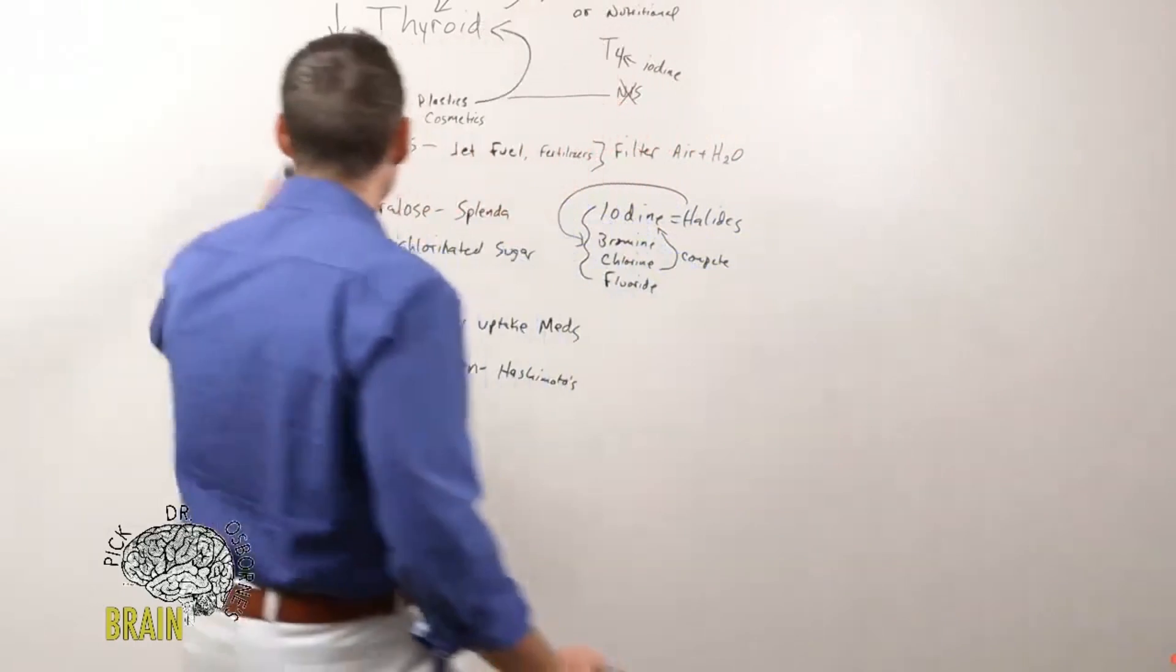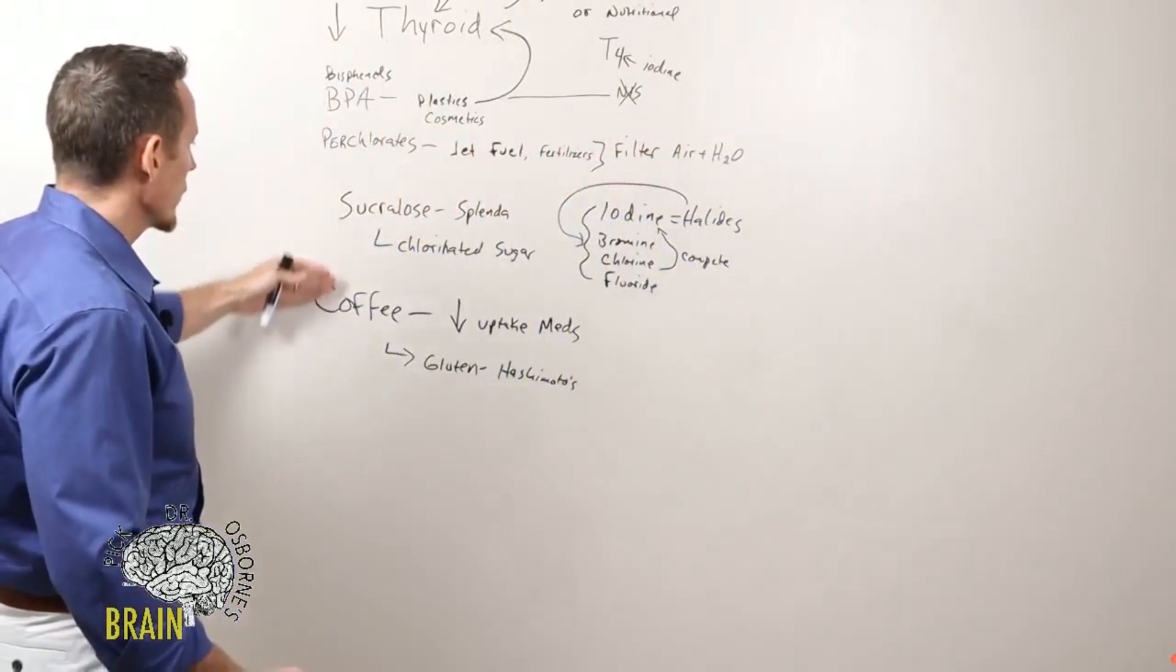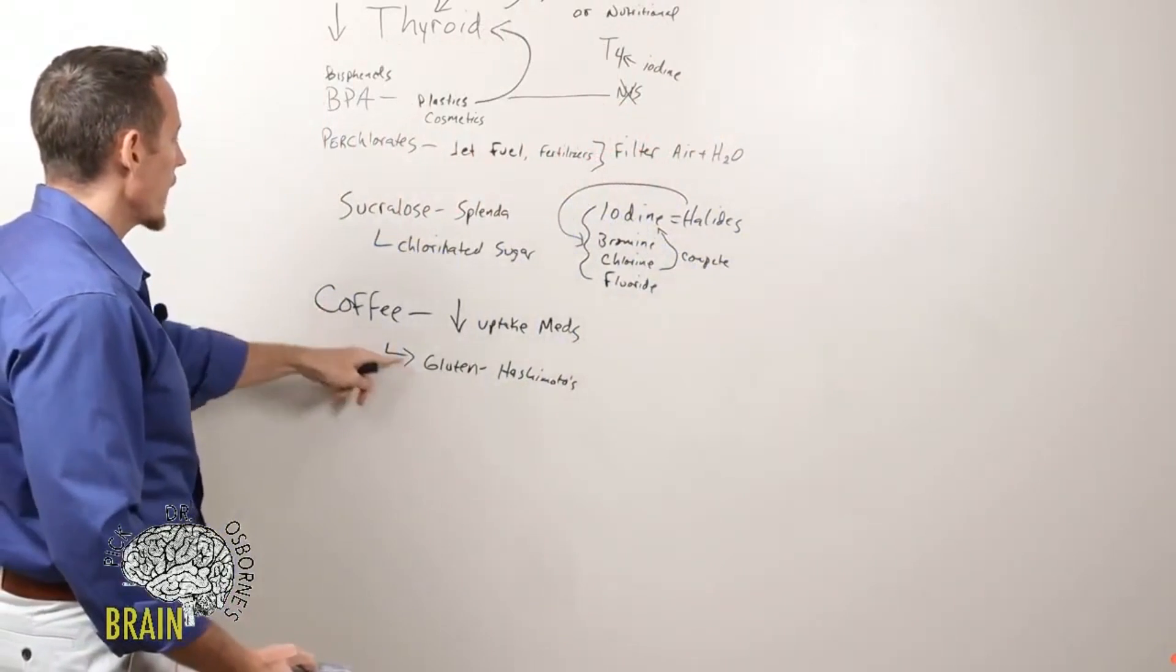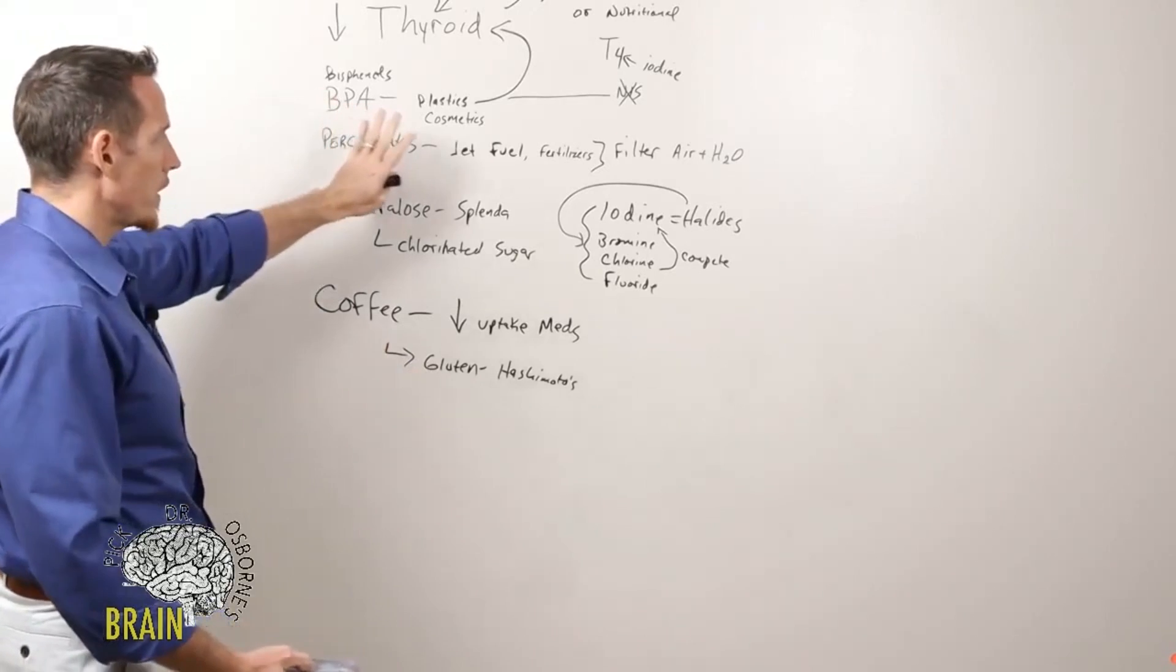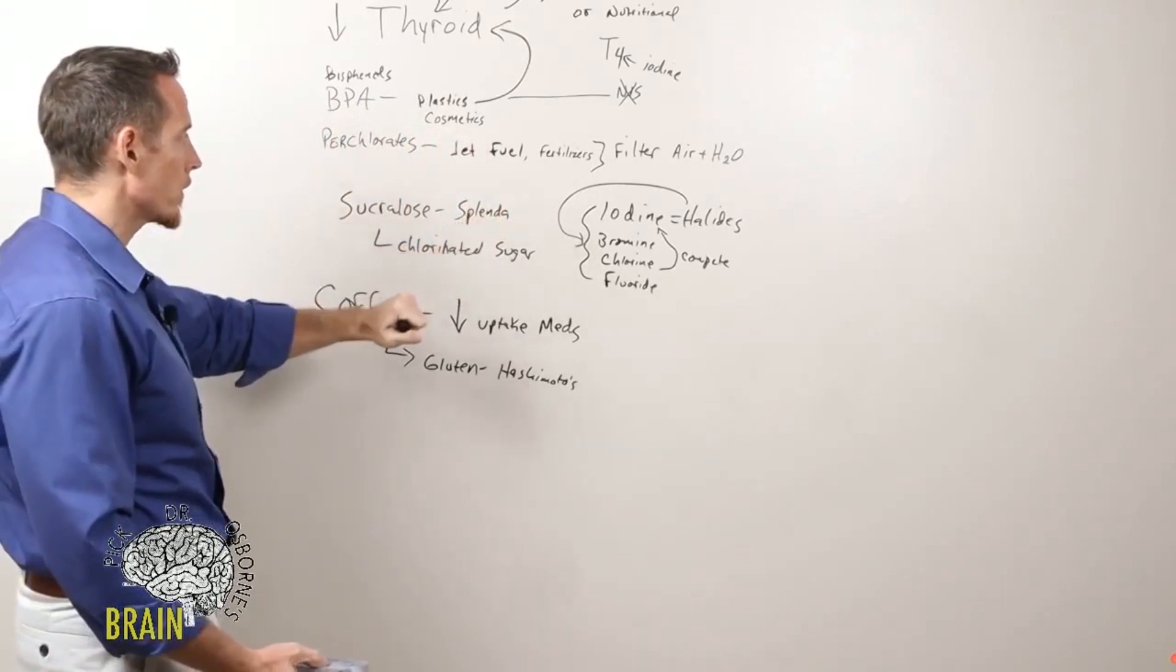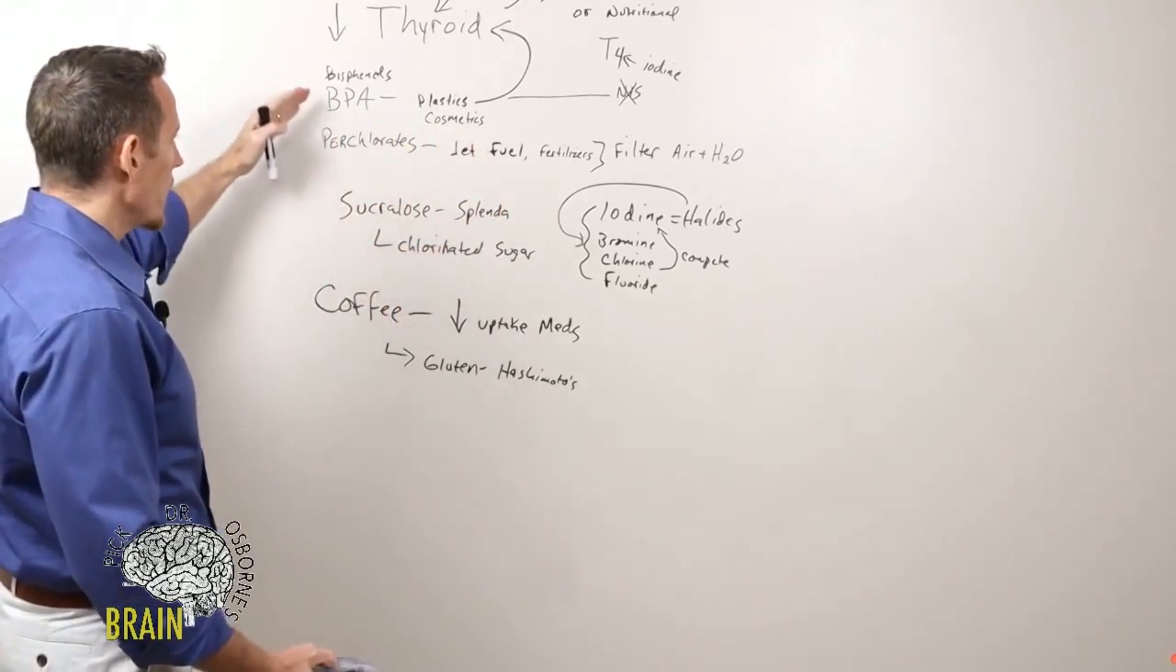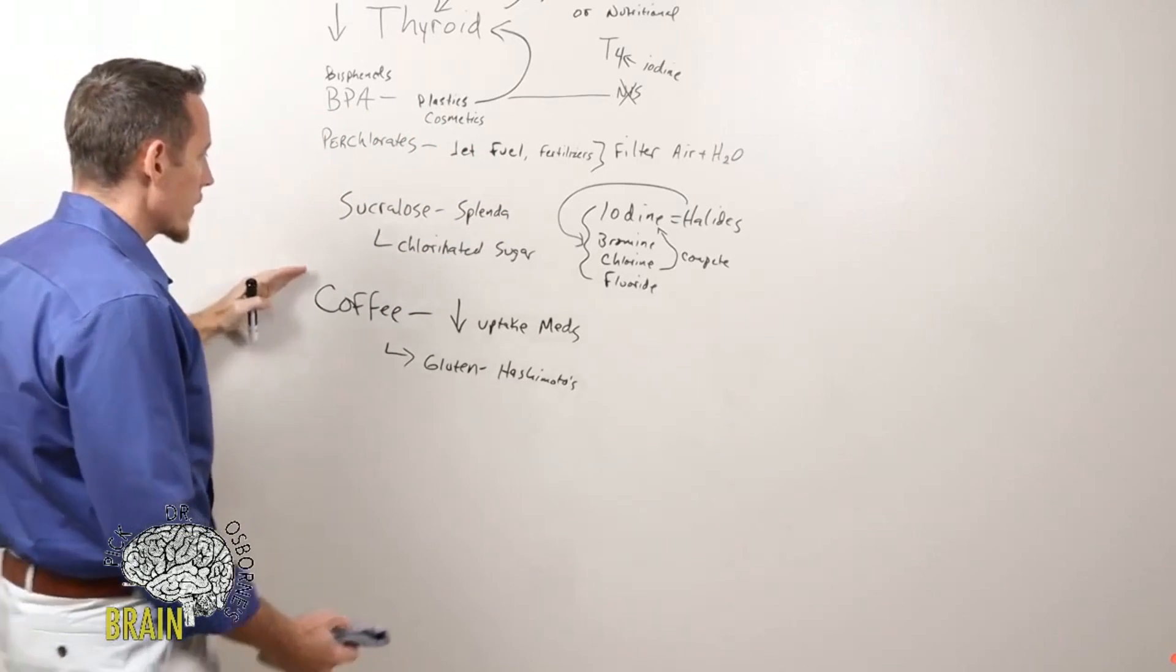What are the things that could cause thyroid issues? Bisphenols, perchlorates, sucralose, coffee, gluten cross-reactivity - these are very common. Again, this is not intended to be an all-inclusive list of all the things that we know can cause low thyroid, but is intended to give you some information that you can go have an intelligent conversation with your doctor and get deeper answers.